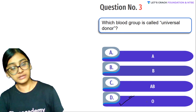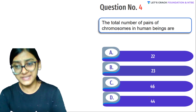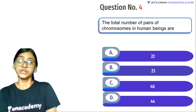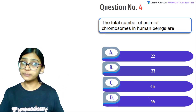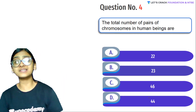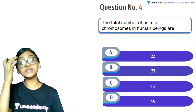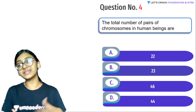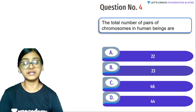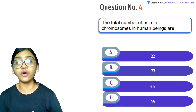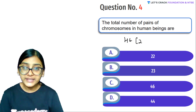Next question: The total number of pairs of chromosomes in human beings. We know that diploid cells have more chromosomes than haploid cells. The body is mostly made up of diploid cells, whereas only germ cells (sex cells) are haploid. Haploid cells have one set of chromosomes; diploid cells have two sets. In diploid cells we see 46 chromosomes — that is 23 pairs. So the right answer is 23 pairs.